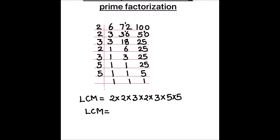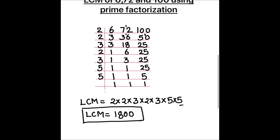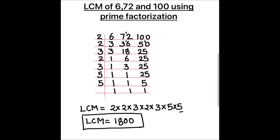2 times 2 is 4, 4 times 3 is 12, 12 times 2 is 24, 24 times 3 is 72, and 72 times 25 is 1800. So the LCM of the numbers is 1800. This is how we can find the LCM of any numbers using the prime factorization method. I hope this video is helpful. If you like it, please hit the like button and subscribe to my channel for more math videos. Thanks for watching.